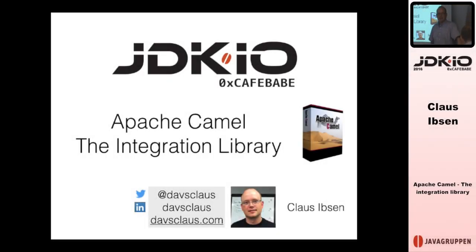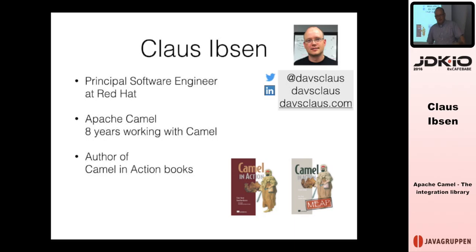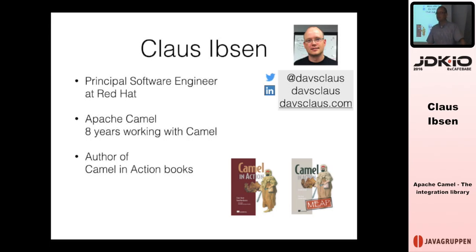Hey, my name is Kamel Klaus, or as the text man knows me, Klaus Sibsson. I work for Red Hat. I've been doing software engineering on Camel for many, many years — more than eight years. I wrote a book together with a colleague, Jonathan, and currently we are writing the second edition. We'll have the last chapters ready by the end of the year, so the book should be out early next year.